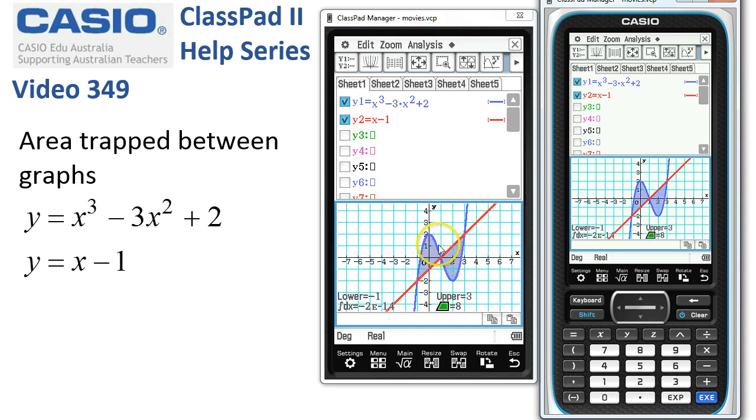And at that point, ClassPad can do some calculations. It's worked out that the area trapped between these two functions, between the points we gave it, is actually exactly 8.